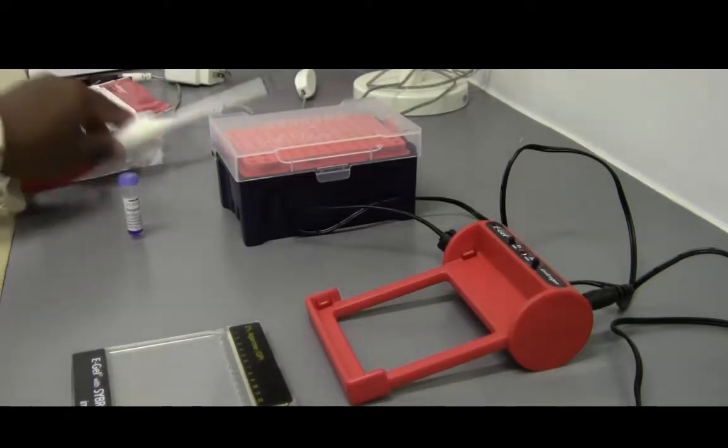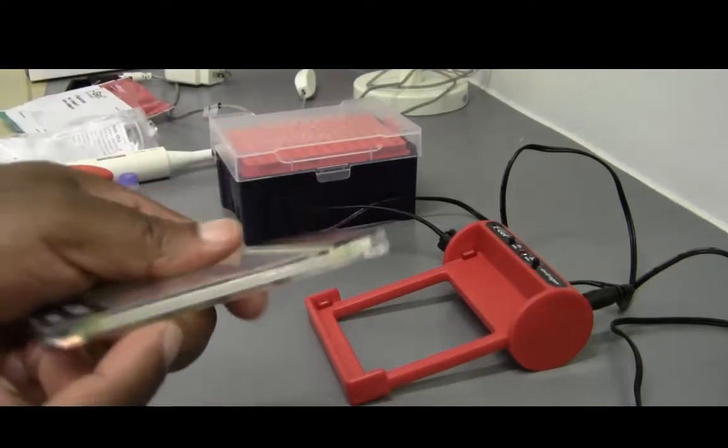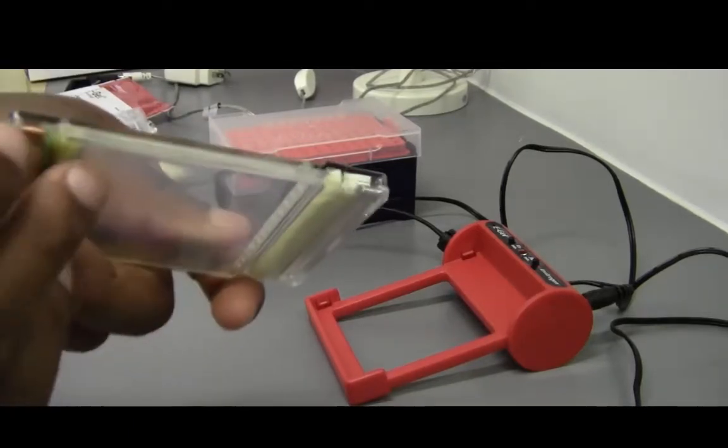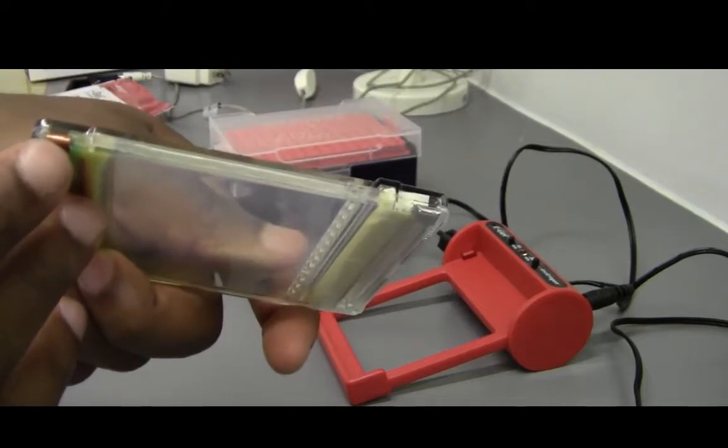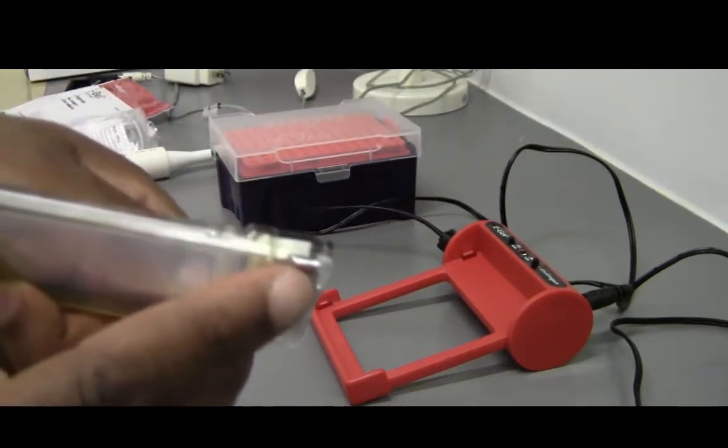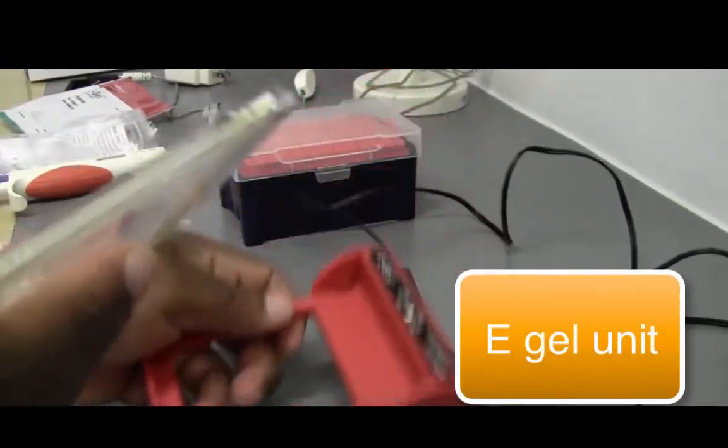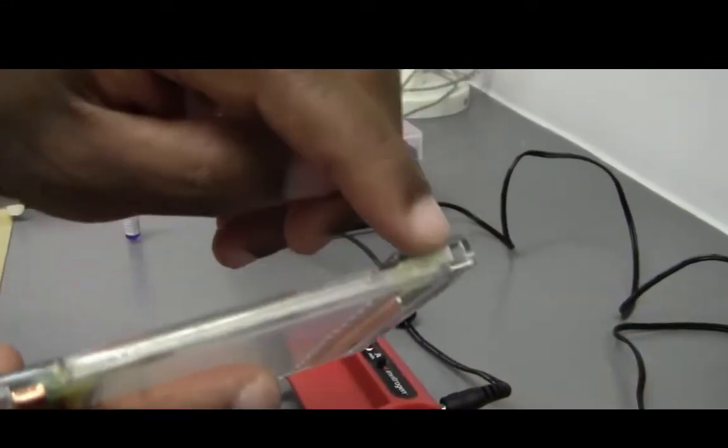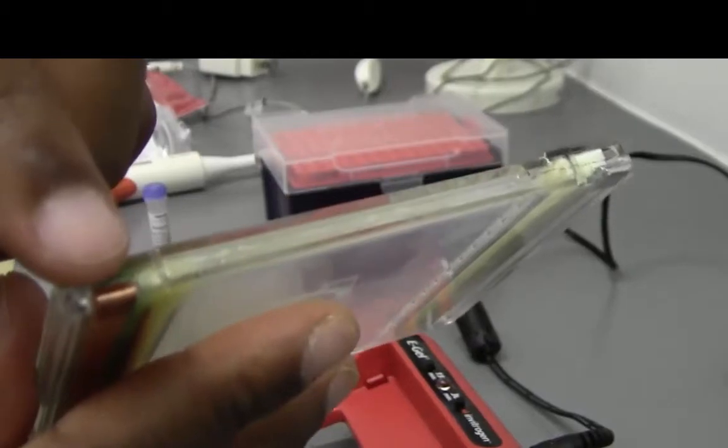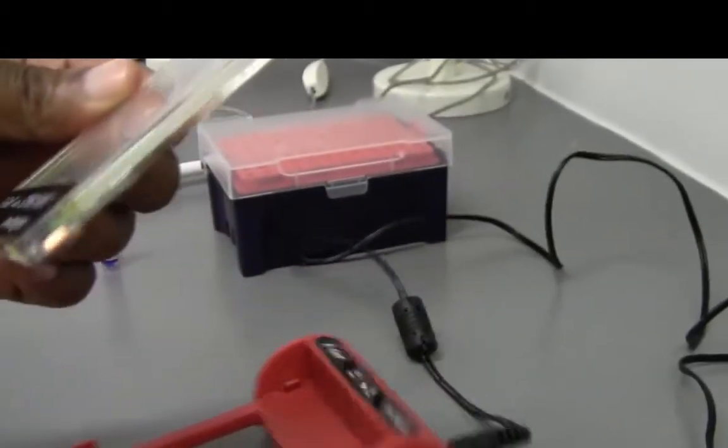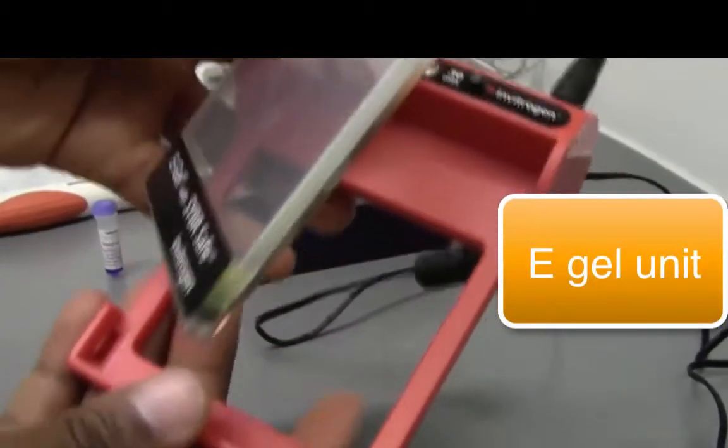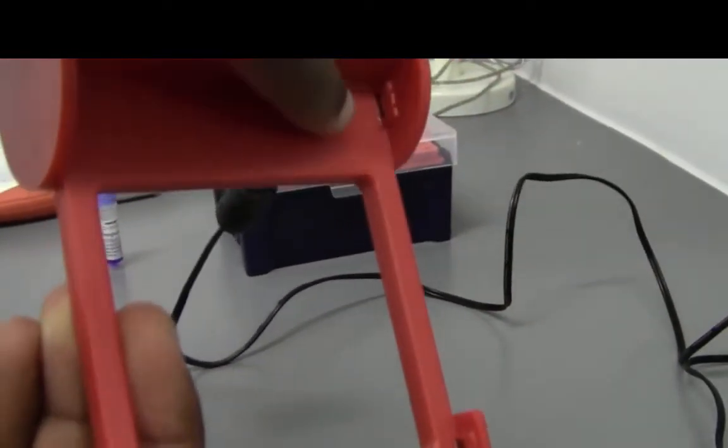Once you're ready then you'll notice that there's sort of a copper and a silver lead there. This is the E-Gel and what you have to do is you don't want this or this to get ripped. So when you insert it into the E-Gel you want to make sure it comes in contact. You'll see the sort of metal components under there.